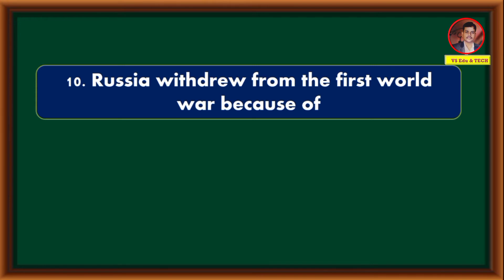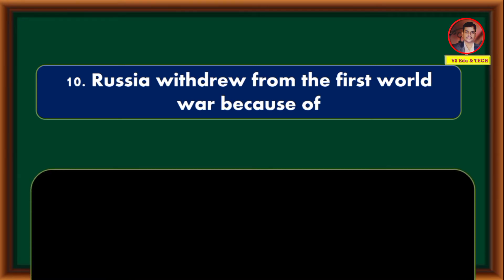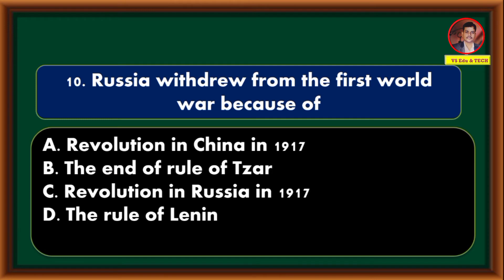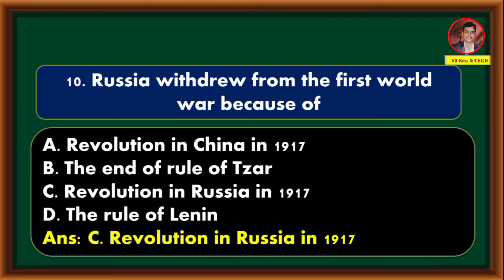Russia withdrew from the First World War because of — revolution in China in 1917; the end of rule of Tsar; revolution in Russia in 1917; the rule of Lenin. Correct answer is option C: Revolution in Russia in 1917.